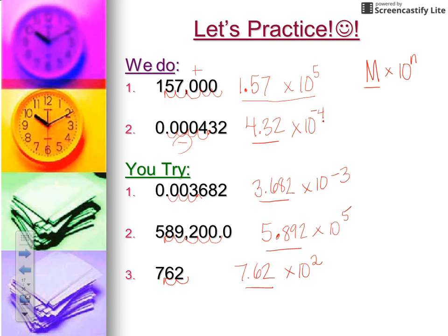The exponent is equal to the number of places you moved your decimal, and the sign of the exponent tells you whether it was a tiny number or a large quantity before you converted it.